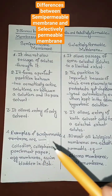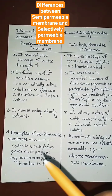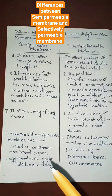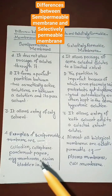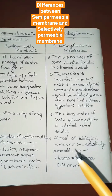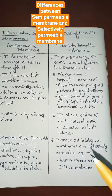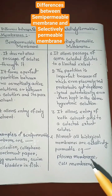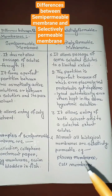Examples of semi-permeable membranes include collodion, cellophane, parchment paper, egg membrane, and the swim bladder of fish. Examples of selectively permeable membranes include the plasma membrane and cell membrane.